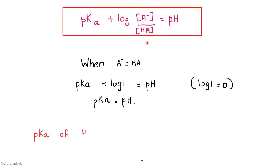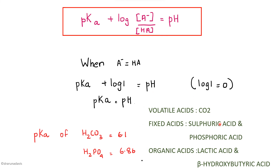The pKa of the bicarbonate buffer system is 6.1, and that of the phosphate system is 6.86. But the normal pH of body fluids is 7.35 to 7.45 — so the pKa values are lower than body pH. This is actually beneficial, because the body has a tendency to become more acidic due to volatile acids like carbon dioxide, and fixed acids like sulfuric acid, phosphoric acid, and organic acids like lactic acid and beta-hydroxybutyric acid. Since these systems have more acidic pKa values, they can effectively combat acid disturbances.